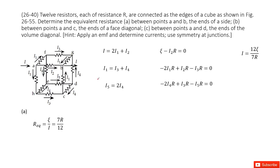Chapter 26 is about DC circuits. We have 12 resistors arranged to form a cube. We need to determine the equivalent resistance at different points. If we try to consider parallel and series connections directly, it becomes very difficult and we will get confused.